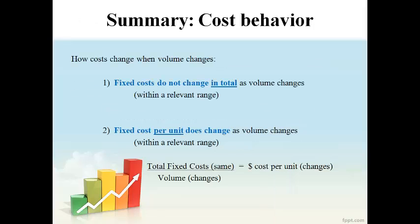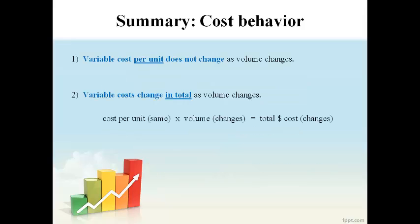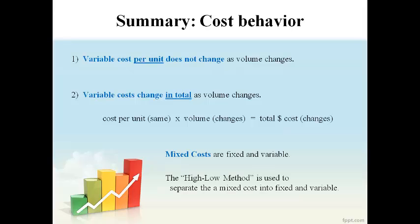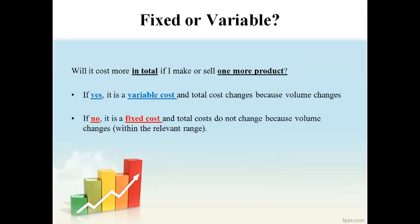Just a quick review. Fixed costs do not change in total because volume changes, but the cost per unit will change as volume changes. Variable costs change in total as volume changes because the cost per unit remains the same. Mixed costs contain some fixed costs and some variable costs. The high-low method is used to separate the fixed and variable costs of a mixed cost. To determine if a cost is variable or fixed, ask if the total cost will change when one more unit is made or sold. If it changes, it's variable; if it doesn't change, it's fixed. Anything in between is a mixed cost. Sometimes a mixed cost behaves mostly like a variable or fixed cost, and in that case it is classified according to the behavior it is most like. It is not cost effective to use the high-low method for every mixed cost.